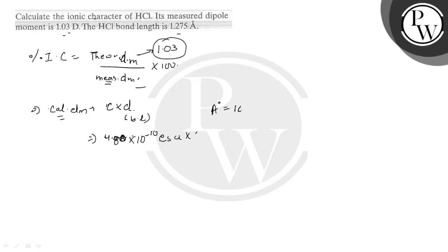Angstrom is 10 to the power minus 8 centimeter. So 1.275 angstrom equals 1.275 × 10^-8 centimeter. Here 1.275 × 10^-8 centimeter will come.